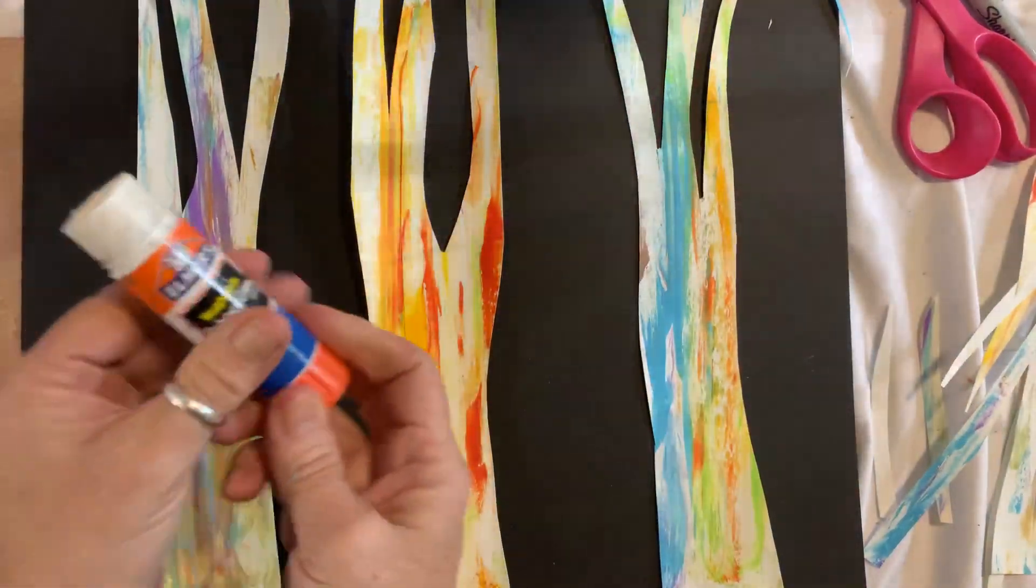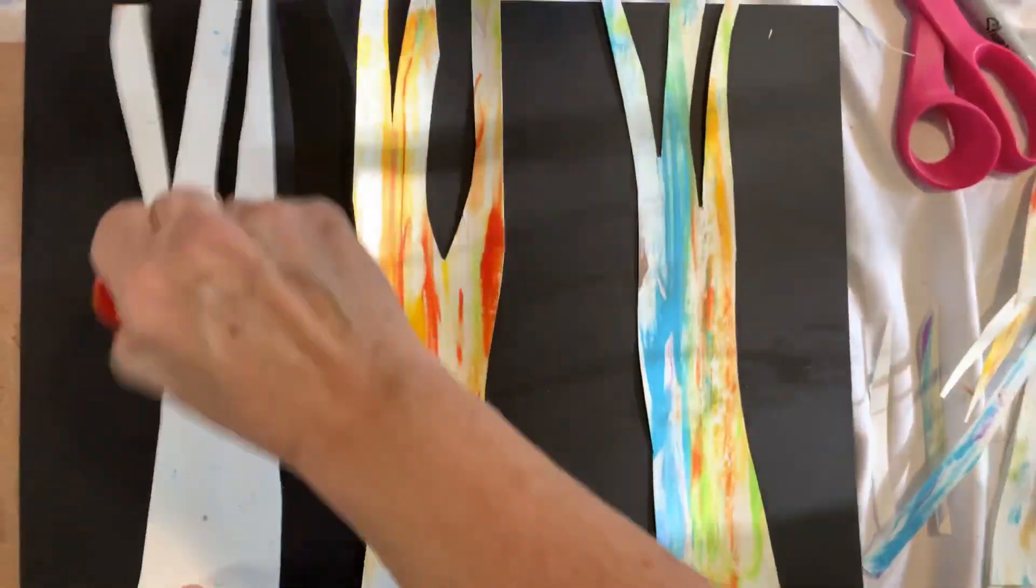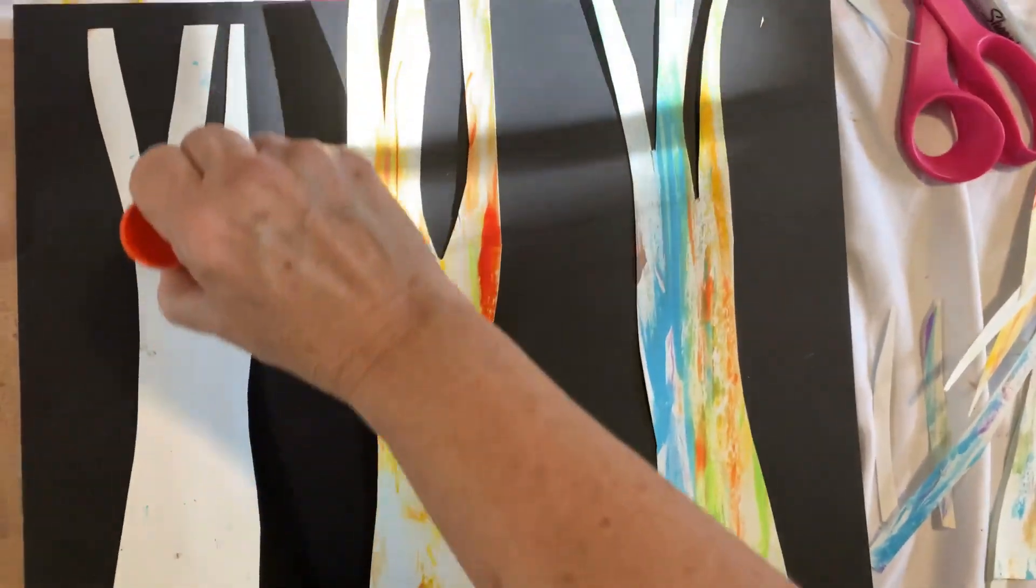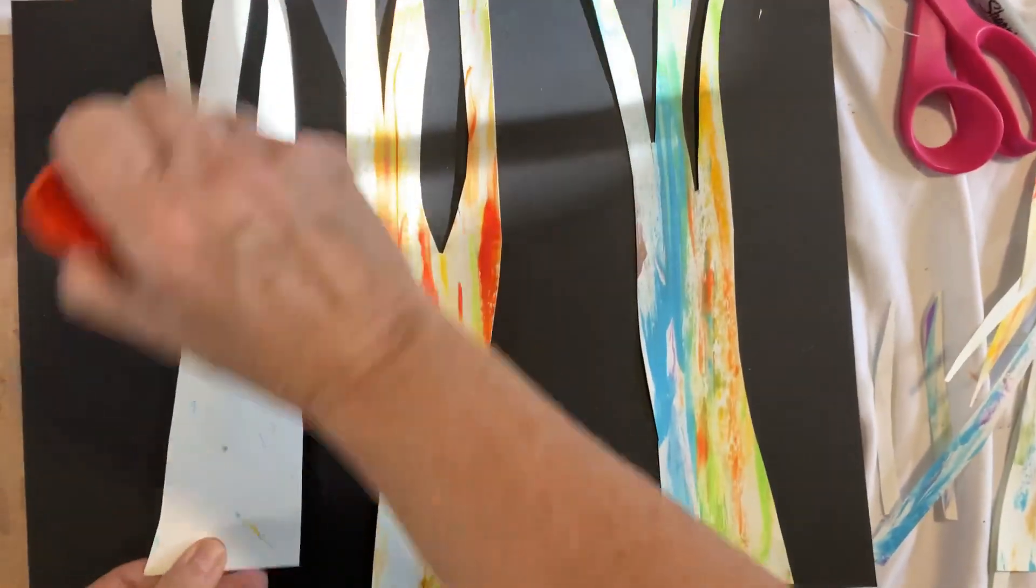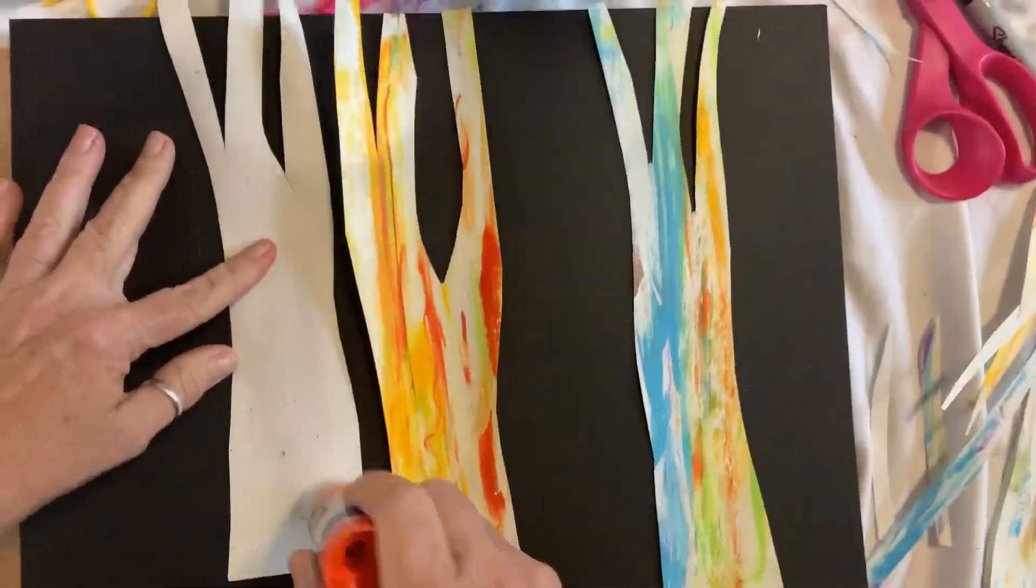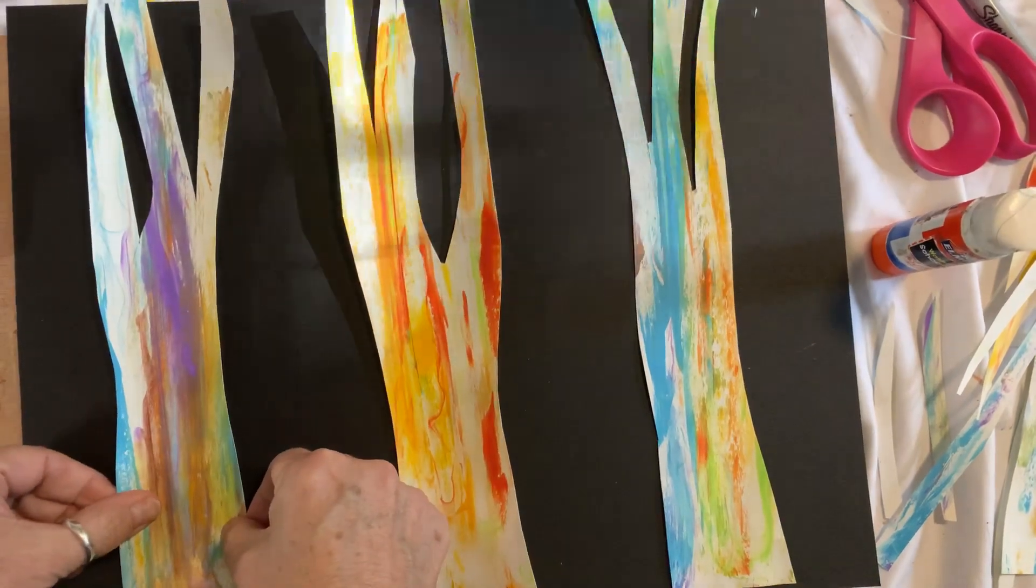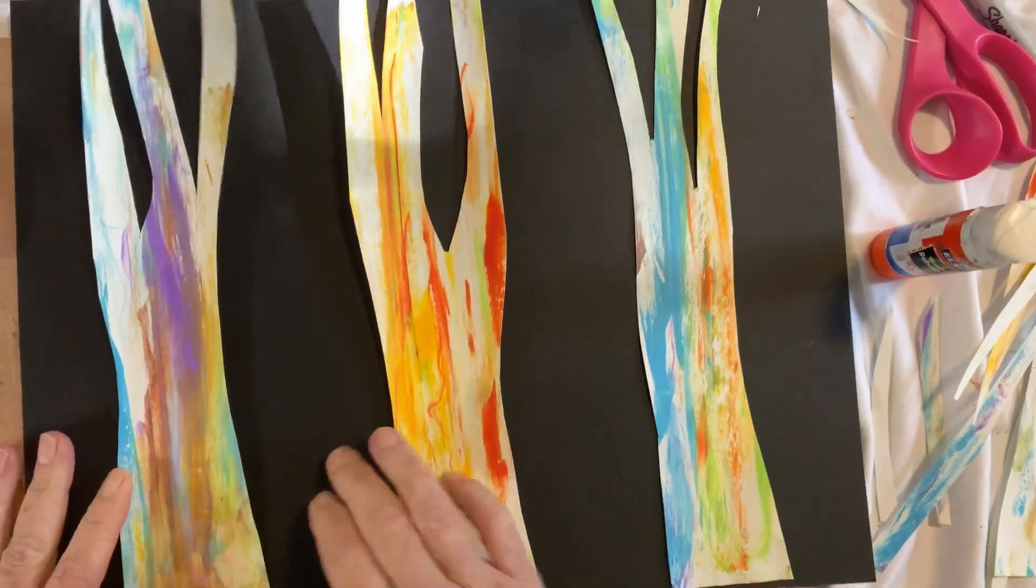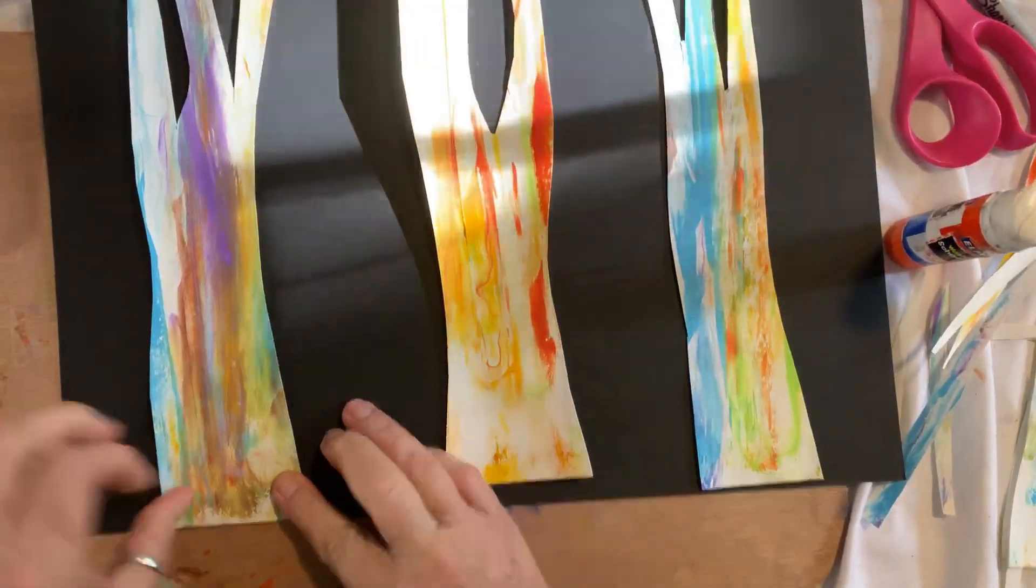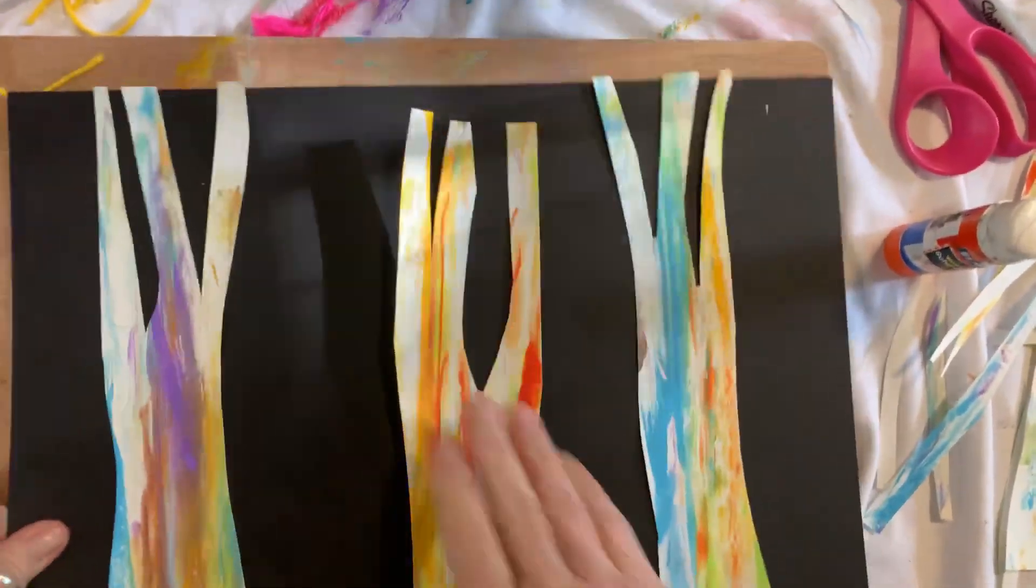So, my glue stick. I'm just going to turn this over. Put my glue. I'm careful not to get it on my black paper. Put it down. Make sure you get it. Pull it down to the bottom right here. And then you want to press down, top.